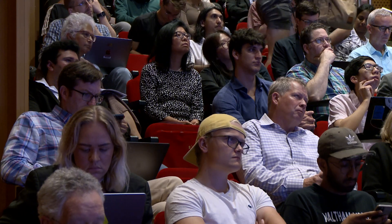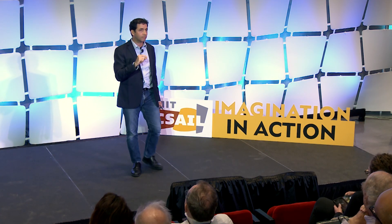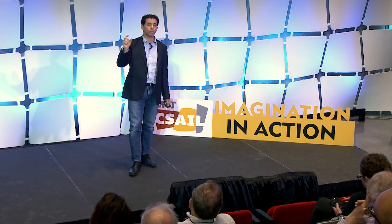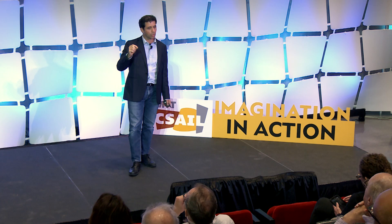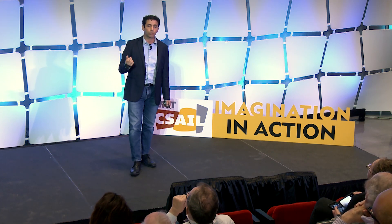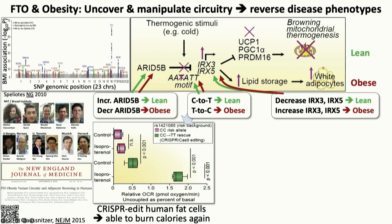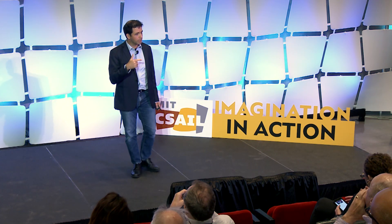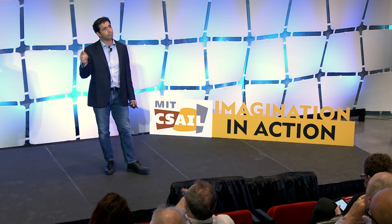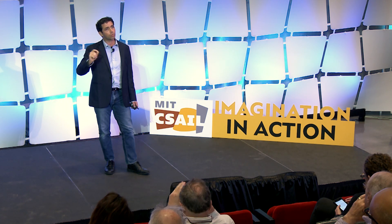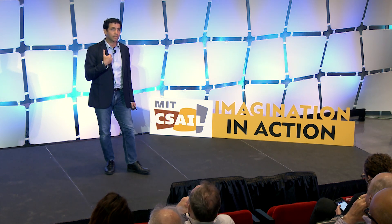By understanding these circuits, we can now start intervening. We've developed methods for changing the upstream or downstream target genes from these regulators. We can also use CRISPR-Cas9 genome editing and change that single nucleotide letter that puts me at risk for obesity. What we find in every one of those cases is that when we understand the circuits, we can intervene like a switch — flipping between thermogenic, burning calories, and lipogenic, storing fat. With a single letter alteration out of three billion letters of the human genome, we can flip the switch and restore thermogenesis in fat cells from individuals like myself.